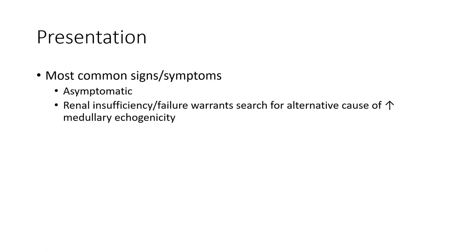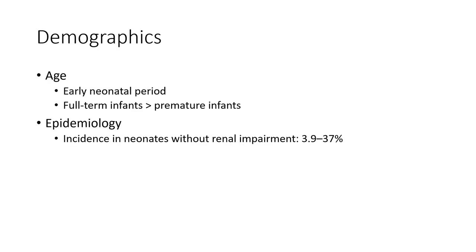Most common signs and symptoms: usually asymptomatic; renal insufficiency warrants a search for an alternative cause of increased medullary echogenicity. Age: early neonatal period in full-term infants, or a premature infant. The incidence in neonates without renal impairment is around 3.9 to 37 percent.